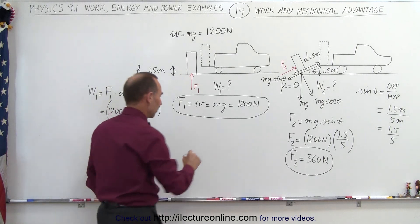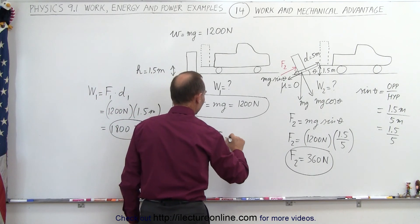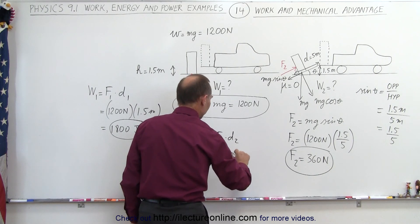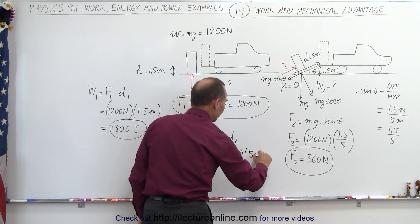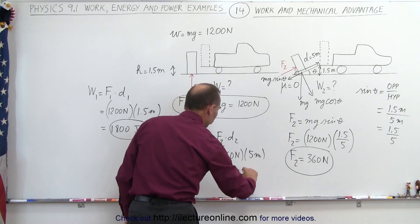How about pushing it up the ramp? The work done, work 2 is equal to force 2 times d2. So in this case it's a much smaller force, 360 newtons, but a greater displacement of 5 meters. And again when you multiply that you get 1800 joules.